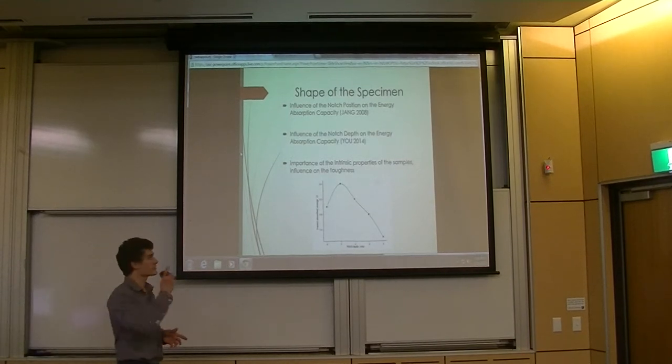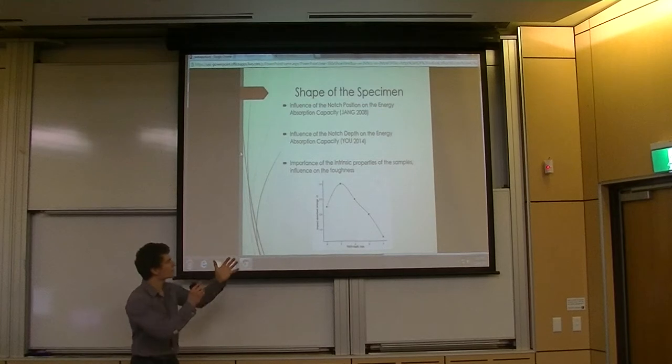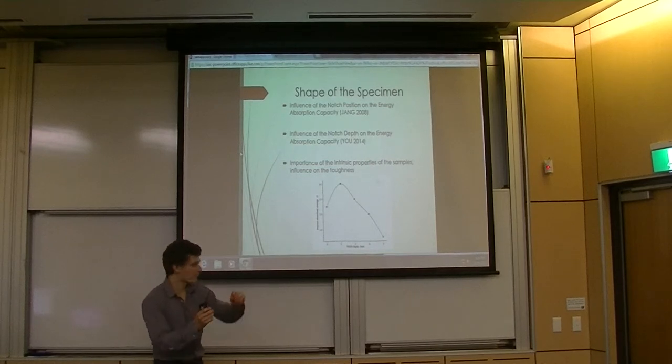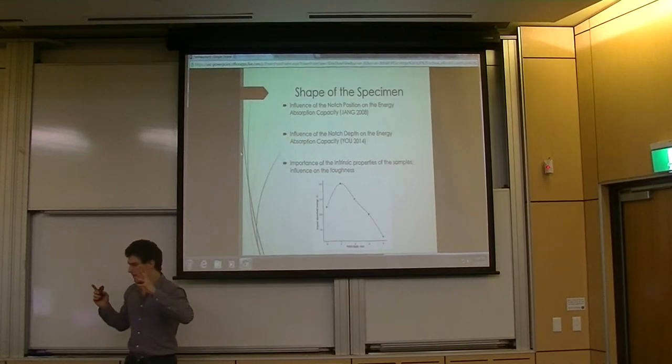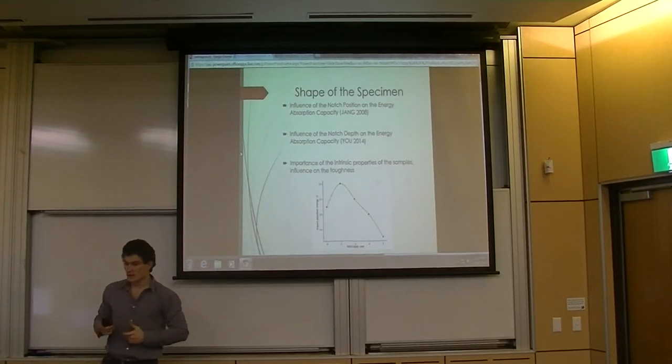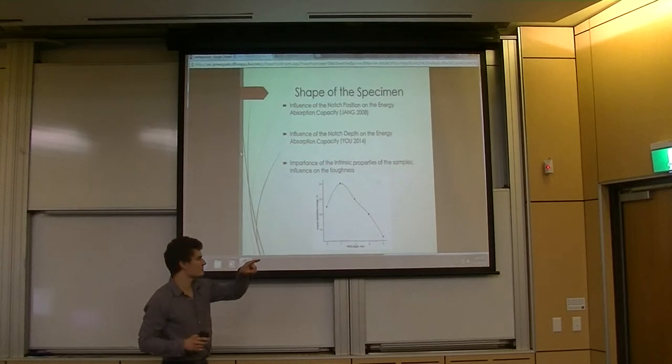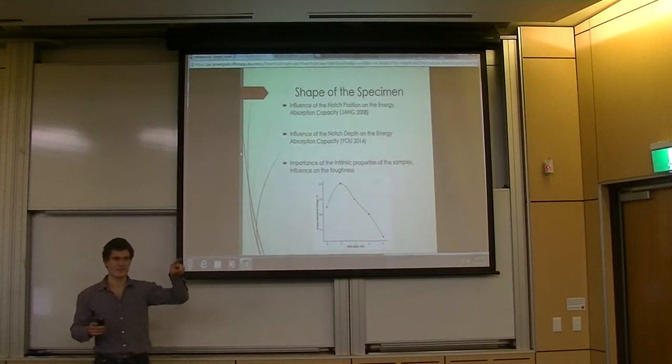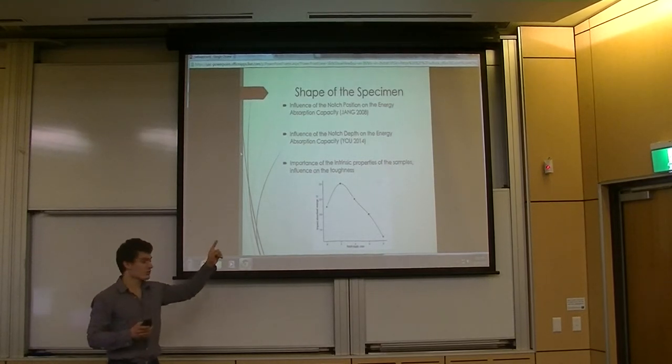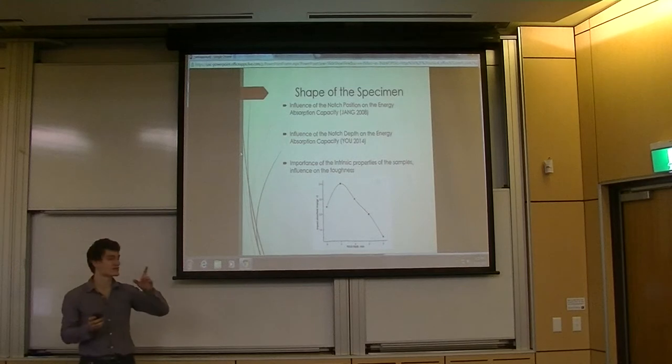Let's talk about the shape of the specimen. A study in 2008 started to determine the influence of intrinsic parameters such as the shape of the specimen. In 2010, it showed that the position of the V-notch has actually an influence on the capacity of energy absorption, so directly the toughness. Later in 2014, this was confirmed by a study which showed that the depth of the V-notch specimen has an influence in this capacity too. So those studies are actually very important because they show that intrinsic parameters can have a direct influence on the toughness of the material.